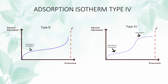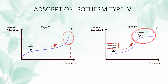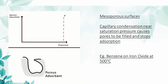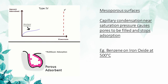Type 4 adsorption isotherms are similar to type 2 adsorption isotherms. In both types, we observe the formation of an inflection point, which indicates the formation of a monolayer. The amount then continues to increase as multilayer adsorption commences. However, type 2 isotherms show unlimited multilayer adsorption, but the type 4 isotherm saturates near the saturated vapor pressure. The saturation observed is mainly caused by the porosity of the adsorbent.